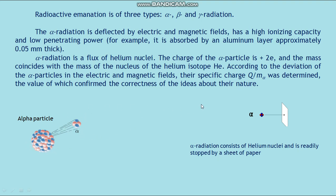Alpha radiation is a flux of helium nuclei. The charge of the alpha particle is plus 2e and the mass coincides with the mass of the nucleus of the helium isotope He. According to the deviation of the alpha particles in the electric and magnetic fields, their specific charge Q/m was determined, the value of which confirmed the correctness of the ideas about their nature.